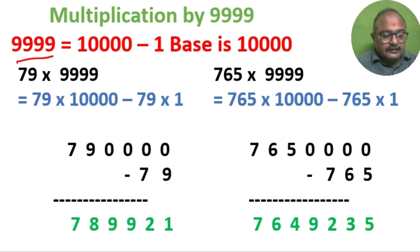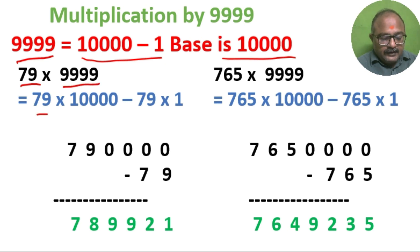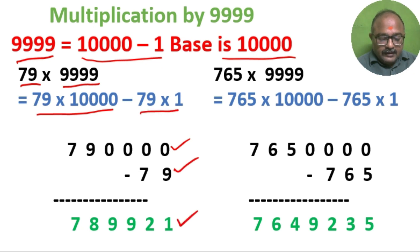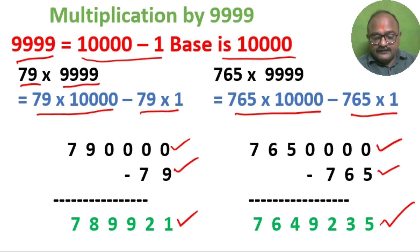9999 can be written as 10,000 minus 1, so the base is 10,000. 79 multiplied by 9999 can be written as 79 into 10,000 equal to 790000, minus 79 into 1 which is 79. If you subtract, we get the answer. Similarly, 765 into 9999 is 765 into 10,000 minus 765 into 1. We get the required answer: 7649235.